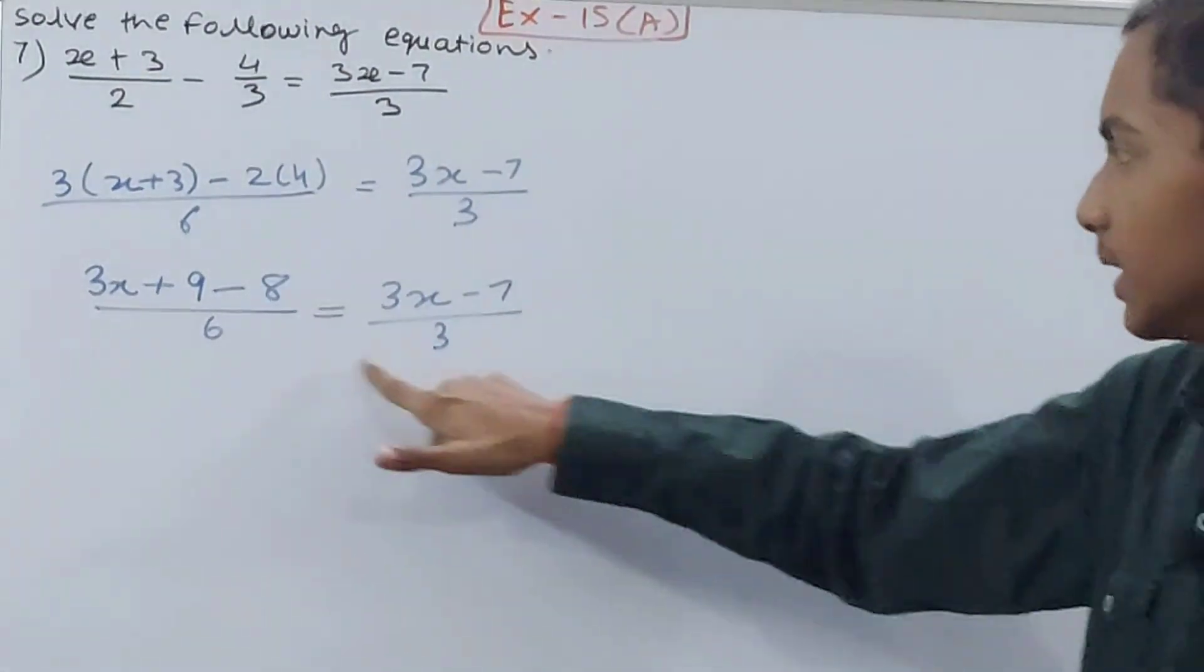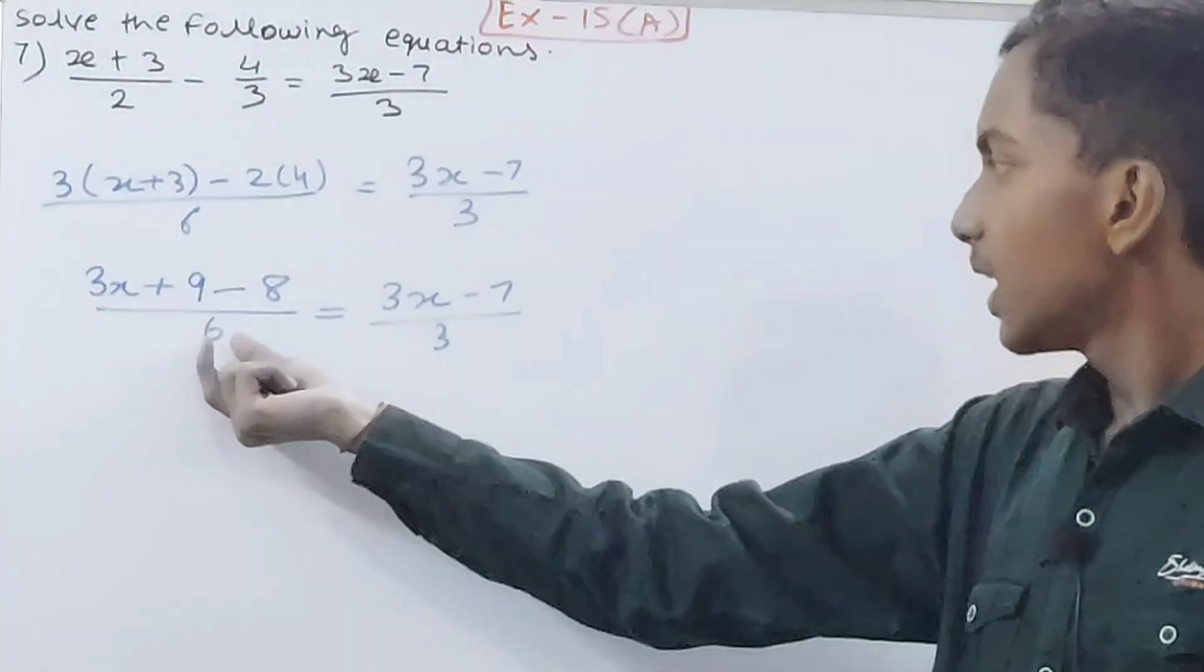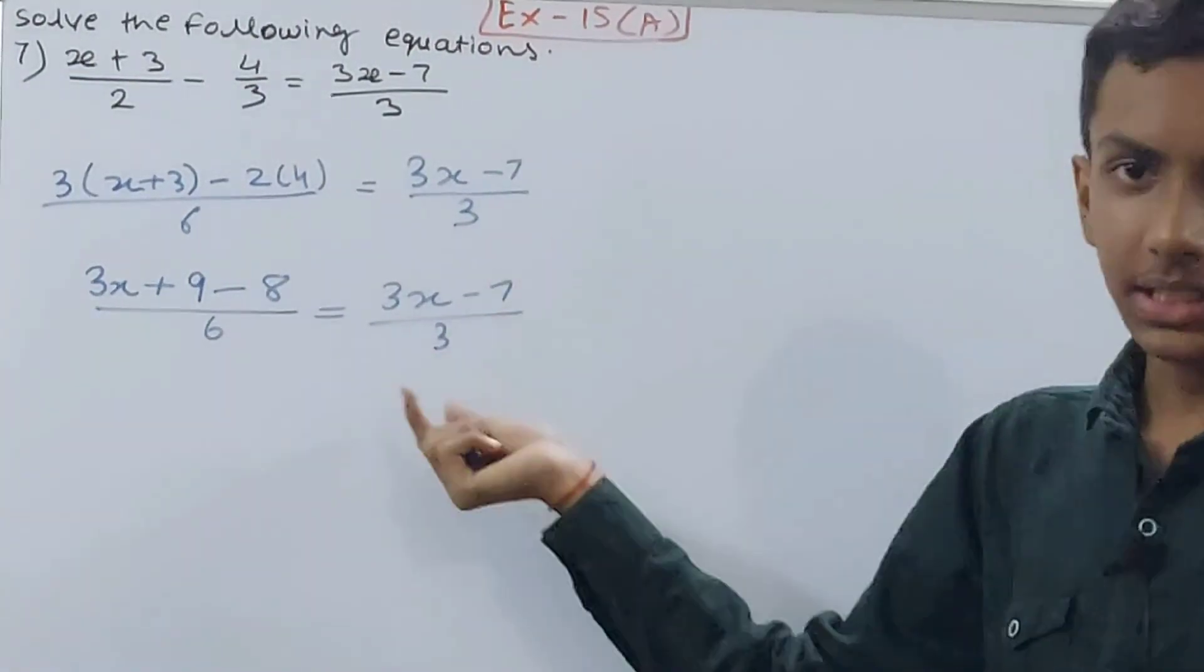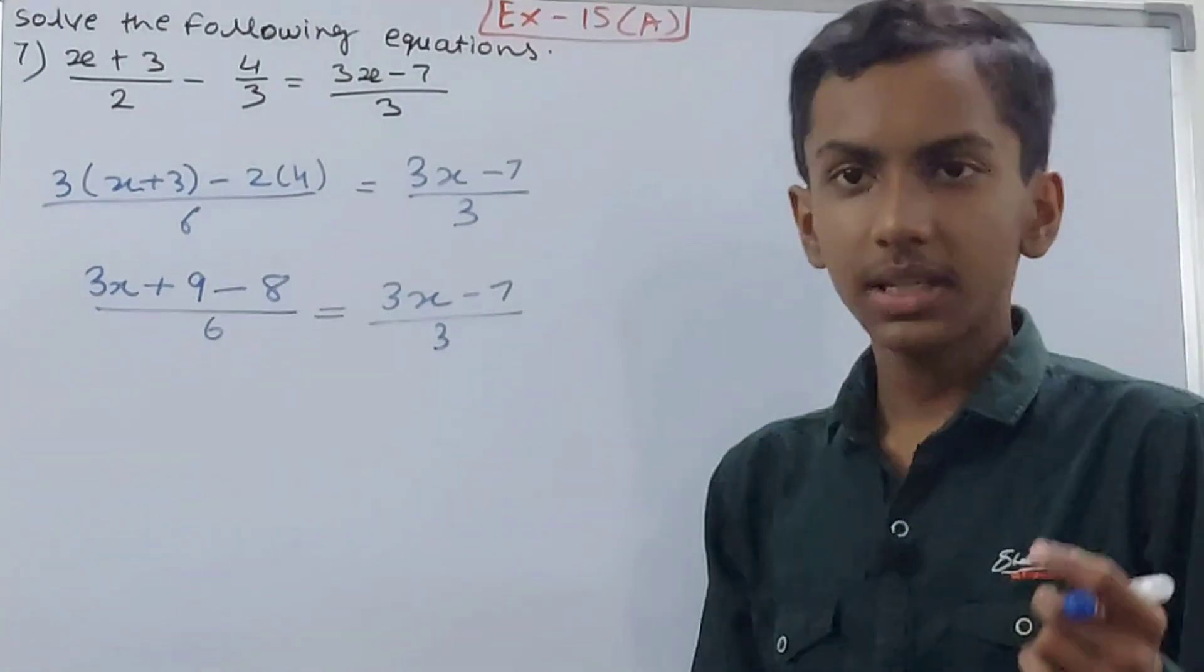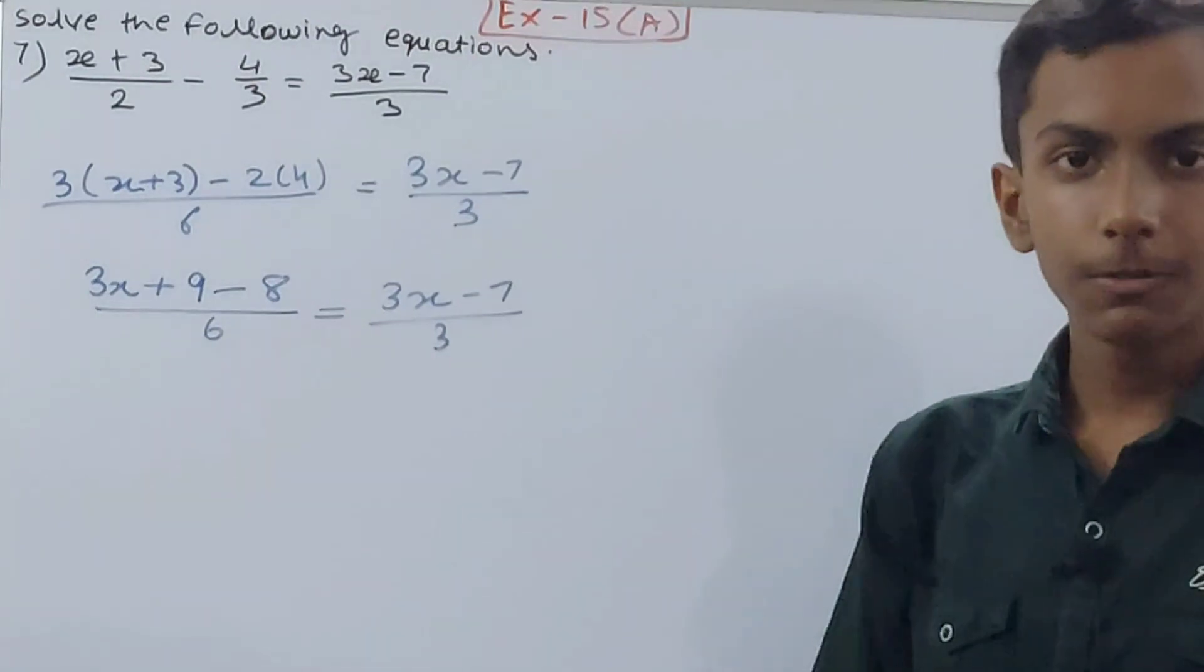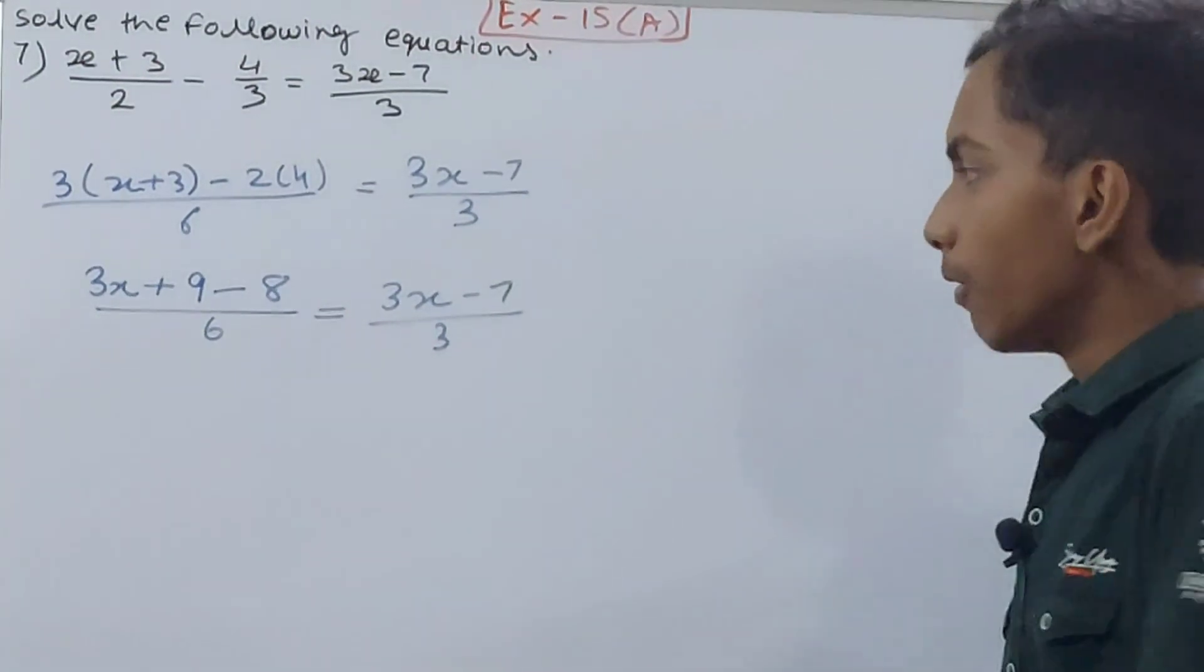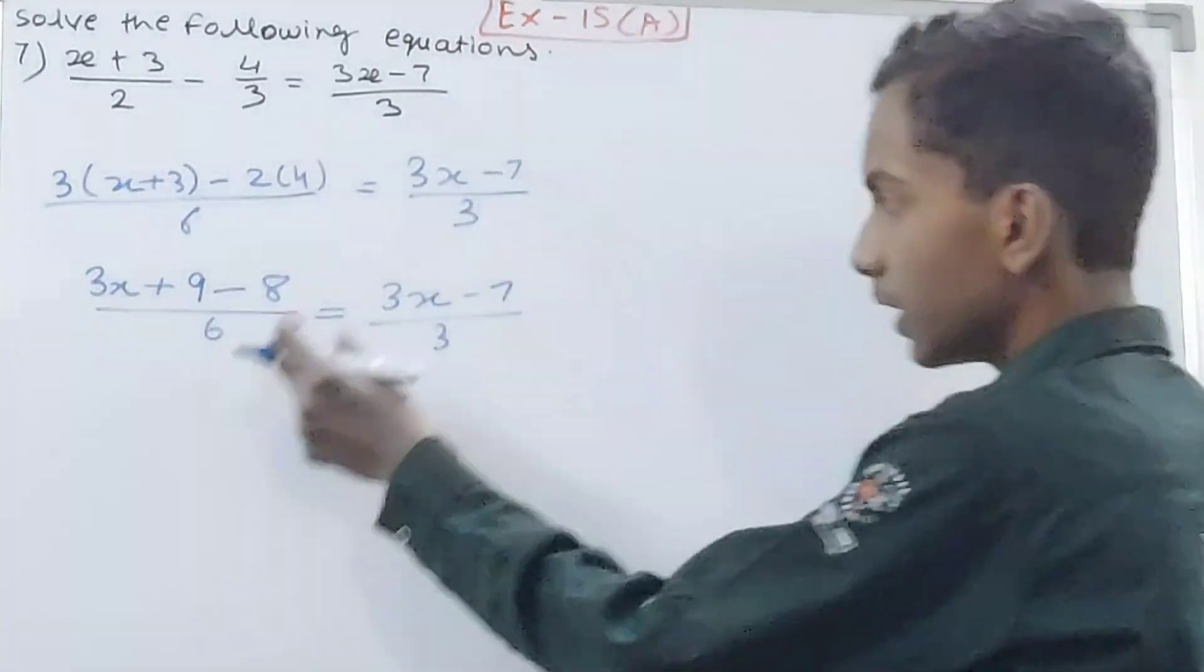will do - 6 and 3, we will not cross multiply here because if I take 6 to this side we can cancel. Remember, canceling will make our work easier. If I do cross multiplication, my work will become lengthier. So I'll take this 6, use the transposition method and bring it here.